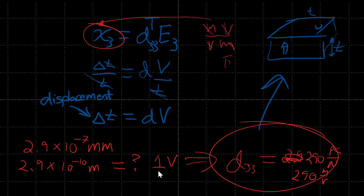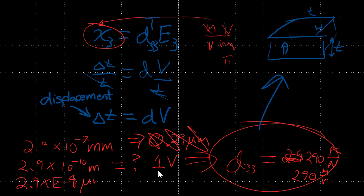We have now determined how you might think about doing an experiment if you have a way of measuring displacement. There are many ways to measure displacement in the micron size. How many microns did it displace? It's actually 2.9 times 10 to the minus 4 micrometers — which is hardly anything. This is why we use resonance, large voltages, and multilayer structures to increase the electric field.